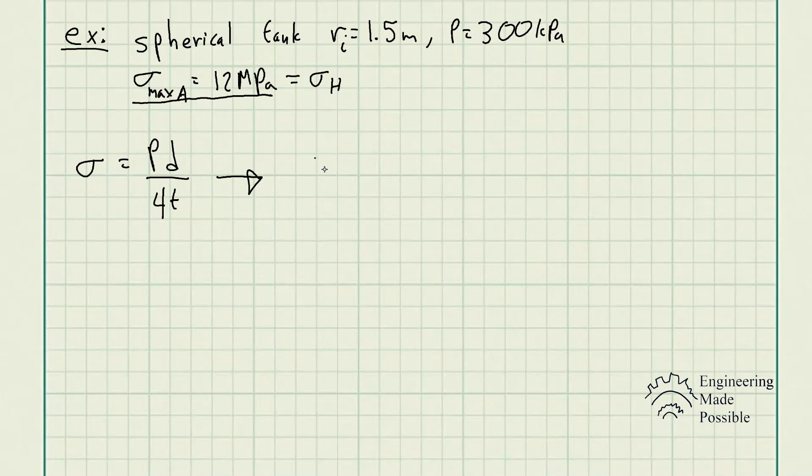We rearrange the equation to solve for the thickness, which is what we're asked to do. So we have the pressure times the diameter divided by 4 times that stress. And we just go ahead and plug in the numbers and solve for the required thickness.